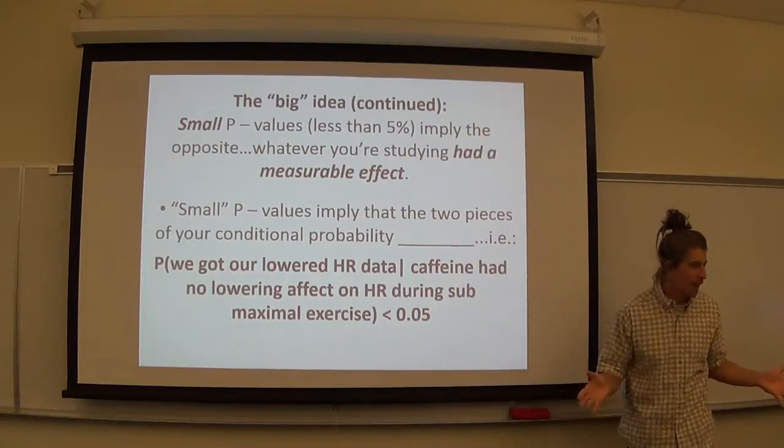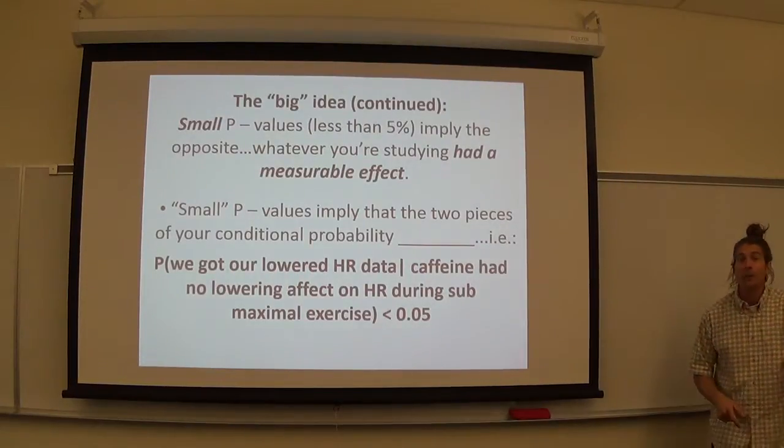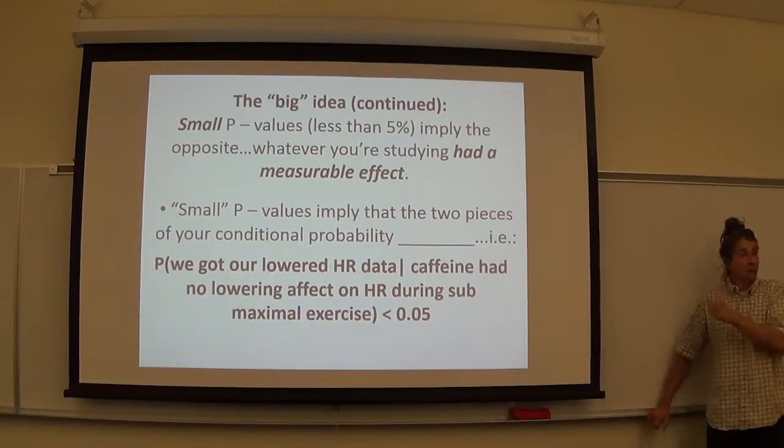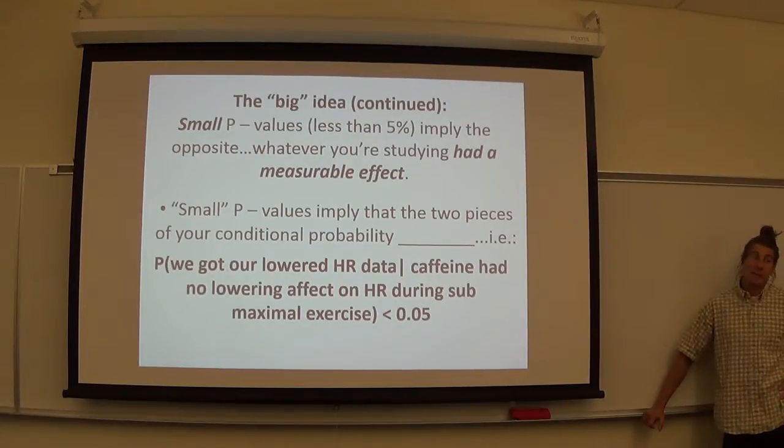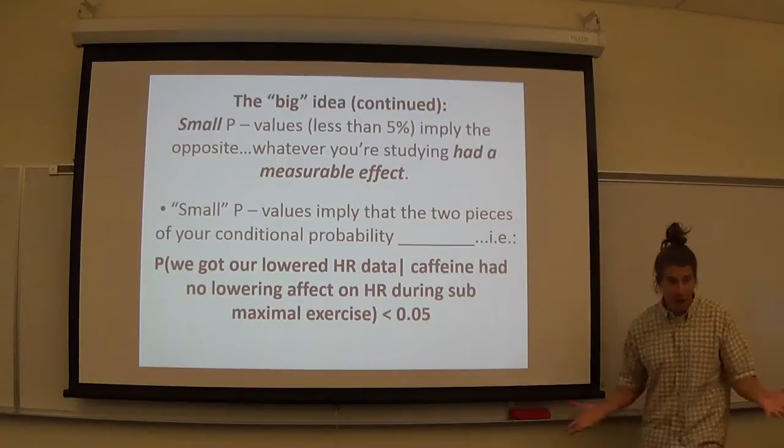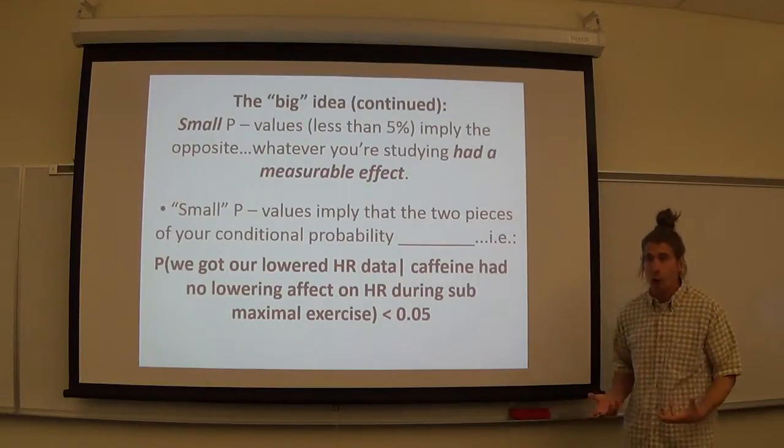Was it a fluke? Is it replicable? Can we do this experiment again with nine other dudes and have similar results? Because if you can't, that's when you start getting papers pulled and you got a type one error. It happens. This stuff happens. This is why we measure error.